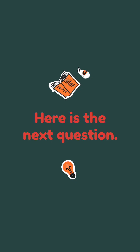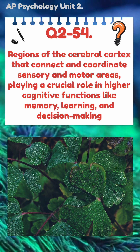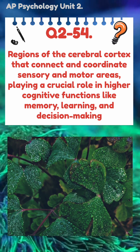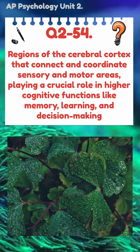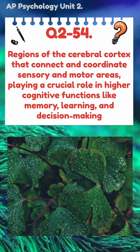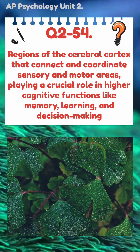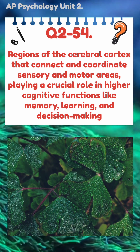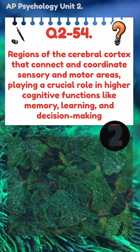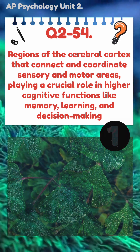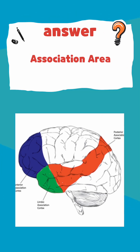Here's the next question. Regions of the cerebral cortex that connect and coordinate sensory and motor areas, playing a crucial role in higher cognitive functions like memory, learning, and decision-making. The answer is association area.